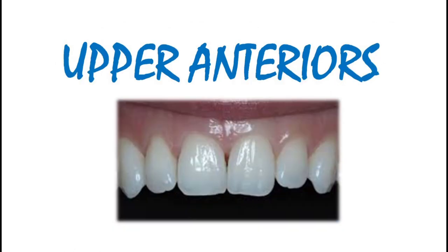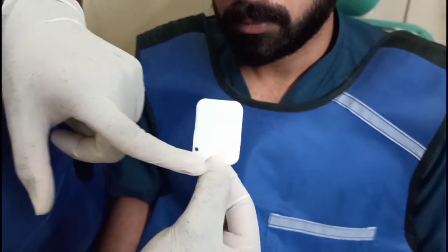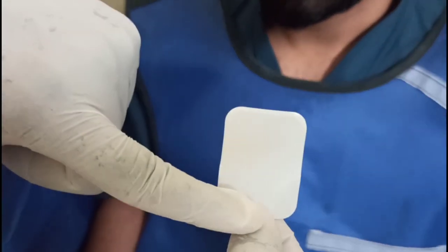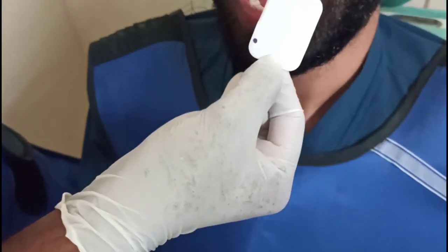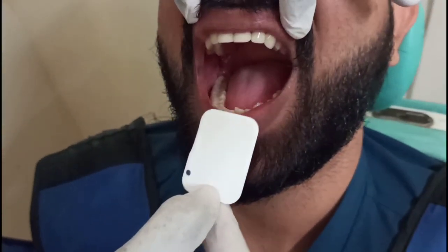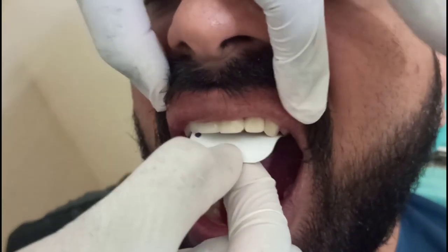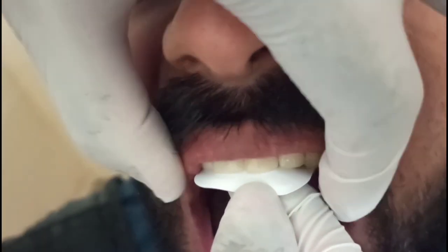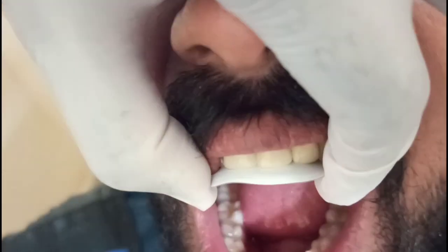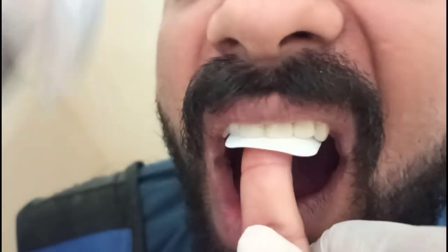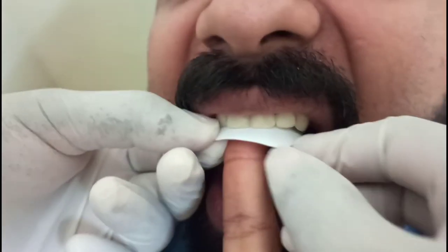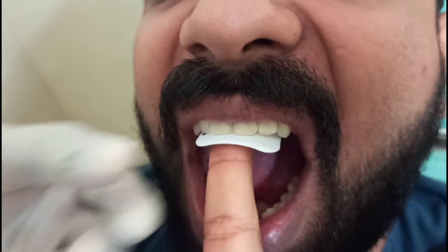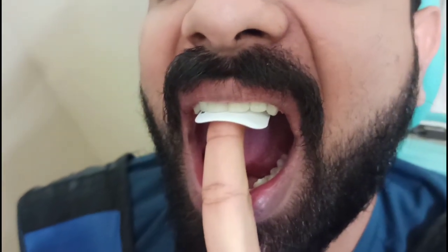Placing the film for upper anteriors: measure how much you want the edge to extend away from the incisal plane and keep that measurement with your thumb finger. Now take it inside the mouth and hit your thumbnail to the incisal plane, making sure the edge of the film is parallel to the incisal plane. If you want to adjust the film, ask the patient to remove his fingers, then adjust it, and put the fingers back.